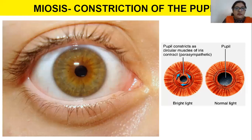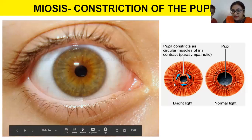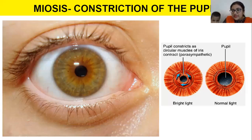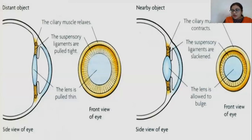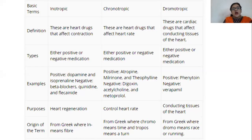Miosis is the constriction of the pupils. The circular muscle of the iris contracts, decreasing pupil size. When circular muscles contract, the eye accommodates more for closer objects. When muscarinic receptors are activated, ciliary muscles contract more and more, increasing near-vision accommodation.